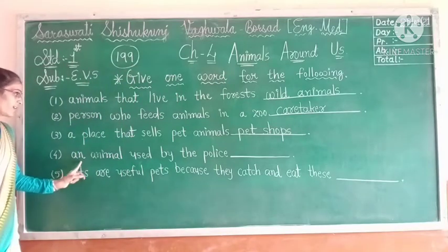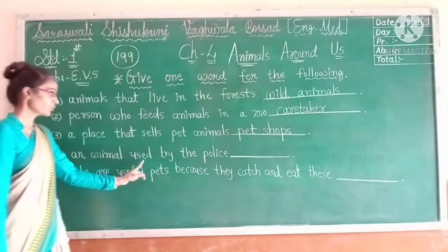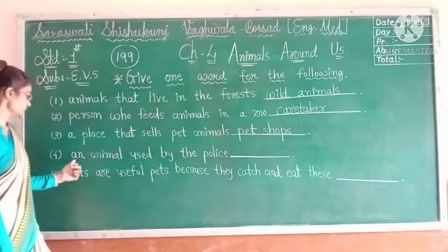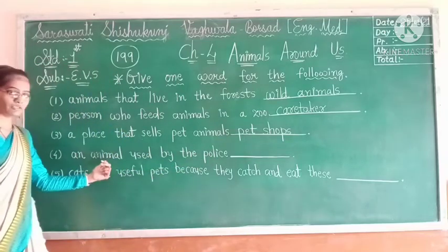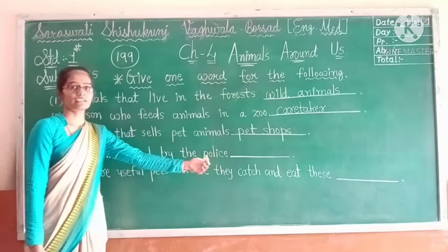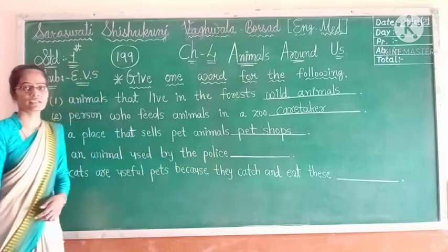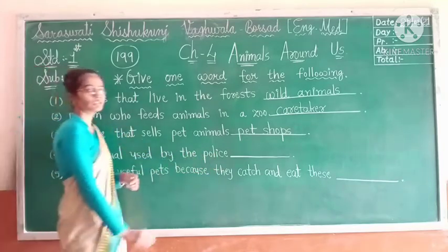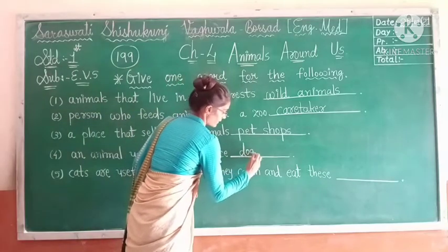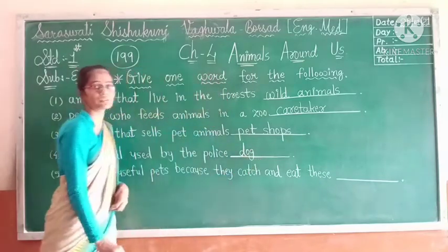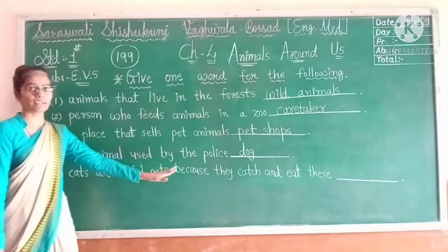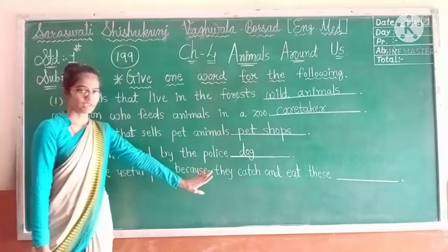Number four: An animal used by the police. Which animal is used by the police? The answer is dog. Dogs are called man's best friend and they are also used by the police.